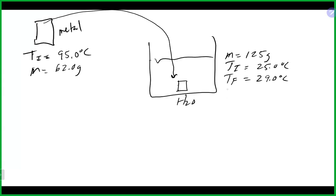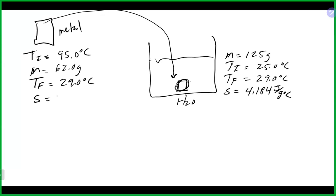The metal going in is exothermic for the metal and endothermic for the water. We always know the specific heat capacity of liquid water, which is 4.184 joules per gram per degree Celsius. With the metal sitting in the water, it will eventually come to a final temperature equal to the water's final temperature, because it comes to equilibrium. So by knowing the water's final temperature, we also know the metal's final temperature.